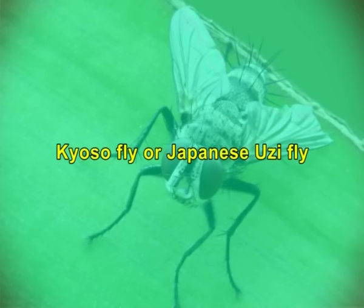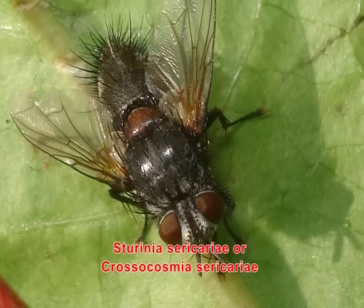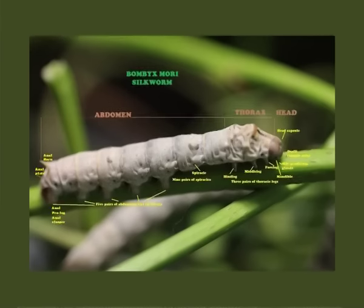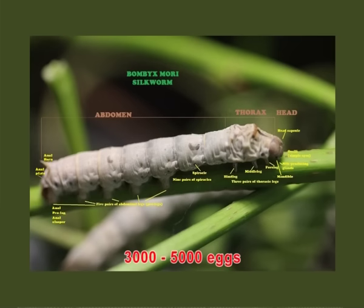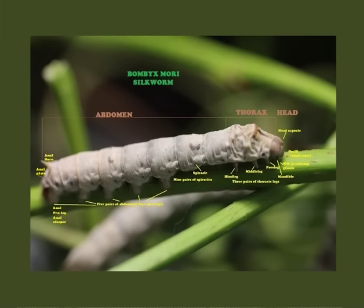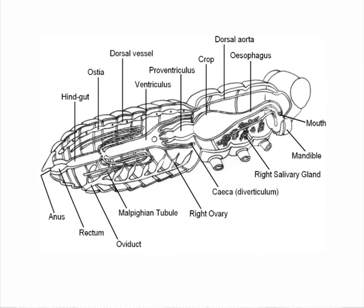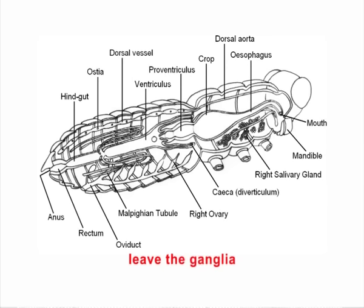Dusting of levigated china clay through a muslin cloth at the rate of 3 grams per 100 spinning larvae before moulting, or 4 grams per square feet when the mountage is taken, also provides protection against Uzi fly infection. The Caosso fly or Japanese Uzi fly, Sturniacarcearia or Crossocosmia sericaria, lays its eggs on the lower side of mulberry leaves along the veins. The eggs hatch when acted upon by digestive juice, penetrate the gut, enter the nervous ganglia, then leave the ganglia, become attached to the spiracles, and feed on body tissue.